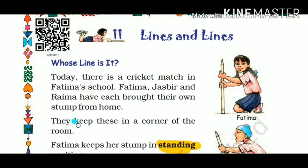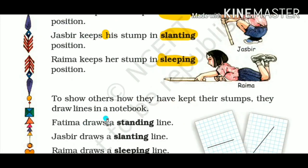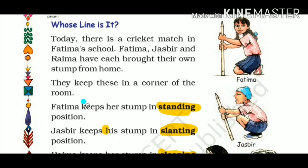They keep these stumps in the corner of the room. Fatima keeps her stump in a standing position. You can see Fatima has kept her stump standing upright — this is the standing position.